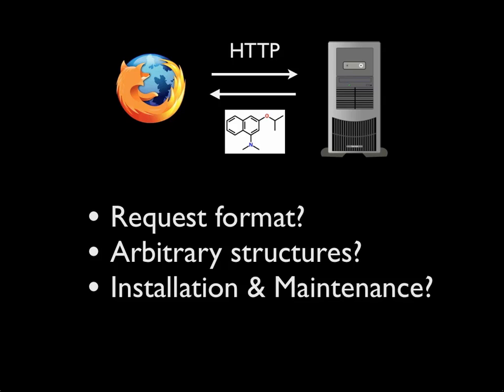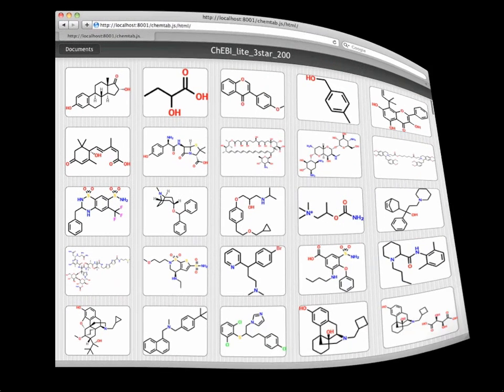This approach can also lead to reduced application performance as server requests are made in a bursty way, with many happening at once for pages with many structures. Although it's possible to mitigate these issues through optimizations, including caching and code refactoring, this takes valuable time and resources. What if it were possible to render structure images directly from MOL files, without server-side imaging software?